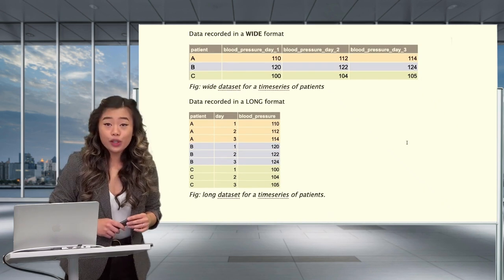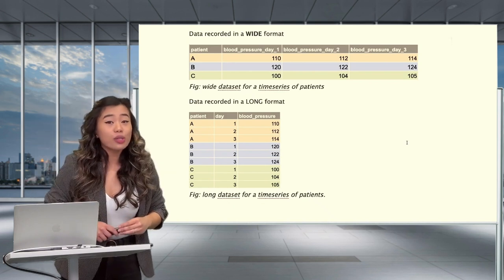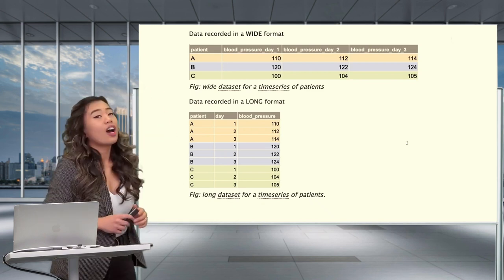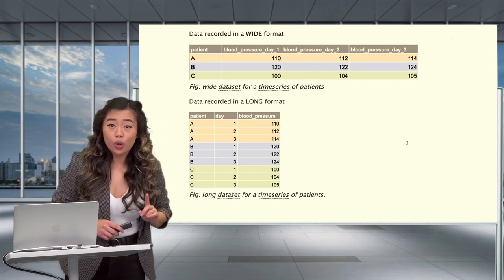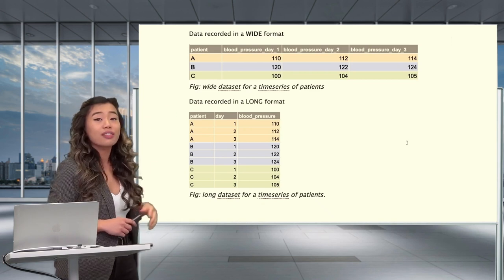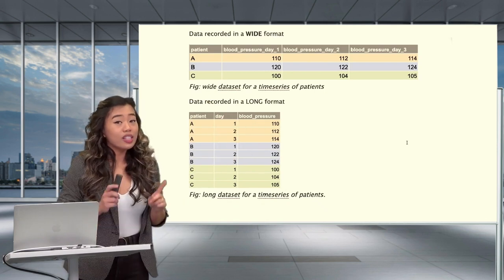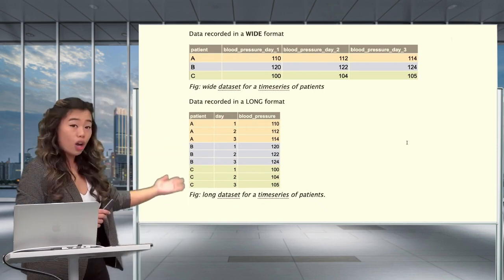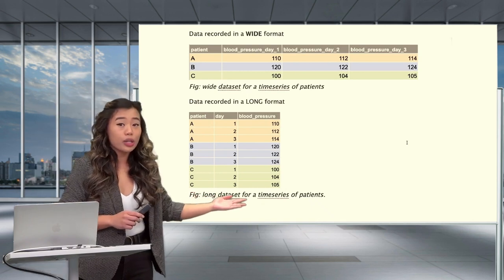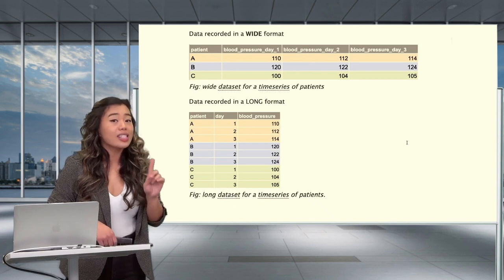In the first figure showing wide data format, you may have noticed that the observational unit — in this example, the patients — occupy only one row, with the measurements, or blood pressure measured across different days, in three different columns. This contrasts from a long format data, wherein the observational units are now spread across multiple rows, and the measurements occupy a single column.